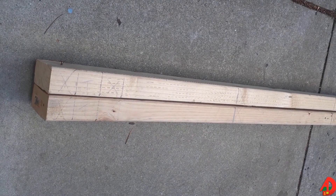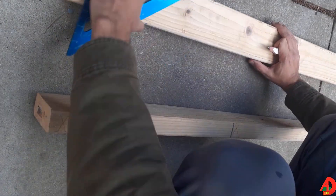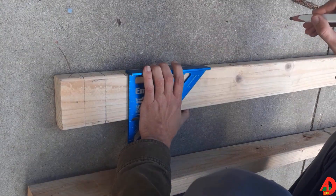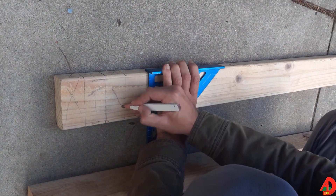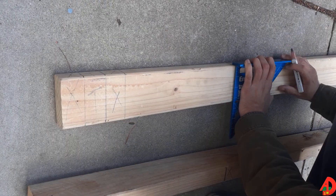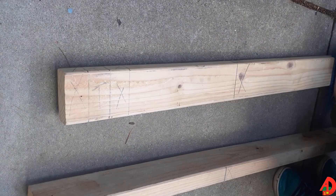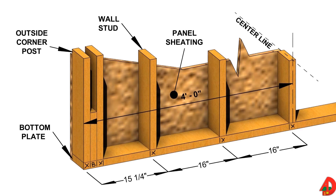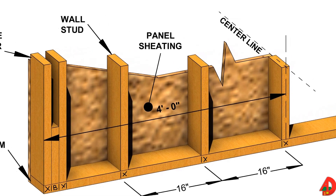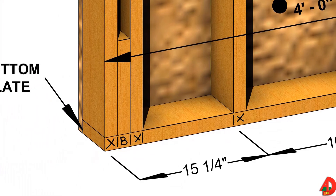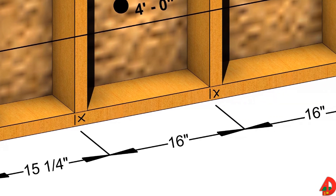A procedure for laying out the first exterior wall is shown in this video. At each end, we mark the corner post components, which are two studs with blocks or a full stud in between them. Then plates are marked for the first stud from the corner post by measuring 15¼ inches from the end. Subsequent studs follow 16 inches on center layout. This layout method ensures that the edges of standard wall sheathing or gypsum board panels fall on the centers of the studs. The letter mark will indicate on which side of the line the member will be placed.